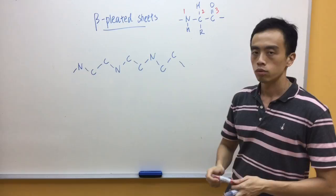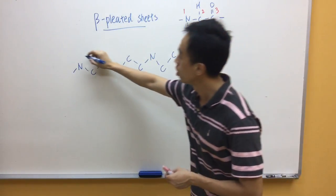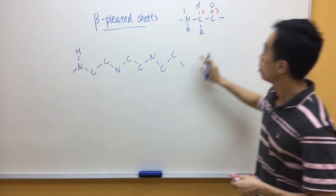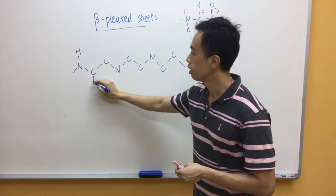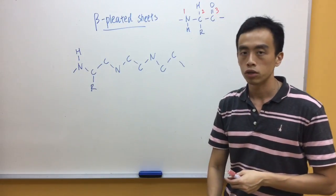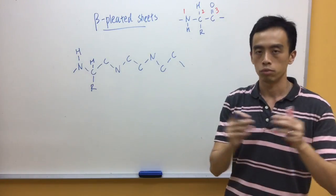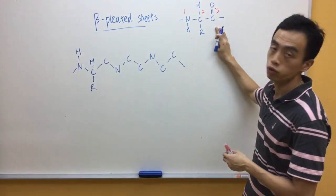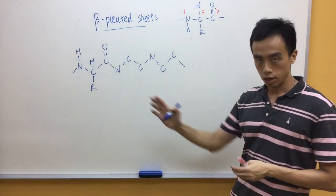And it repeats. So, we have to put in the groups. Position one, I'll have a hydrogen. Position two, I'll have an R group and a hydrogen. R group, I'll point it away from the main chain. Hydrogen, I'll hide it inside the primary structure. Position three, I'll have my acid. And then it just repeats.